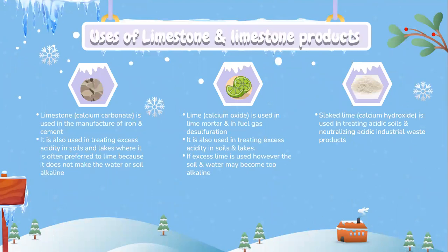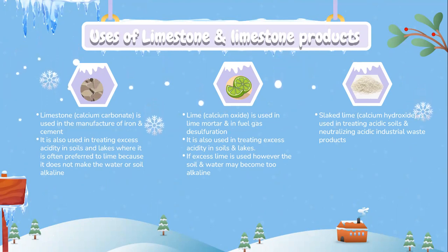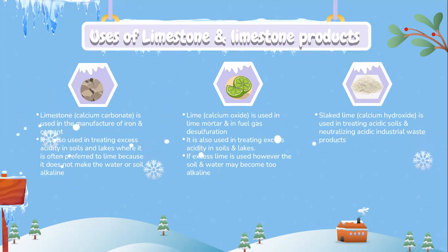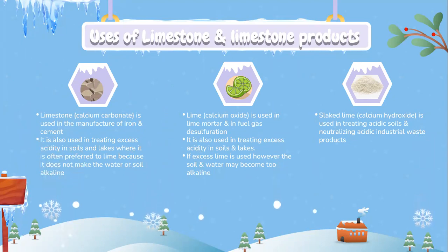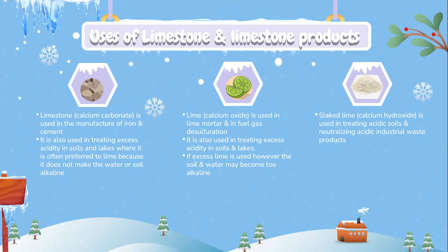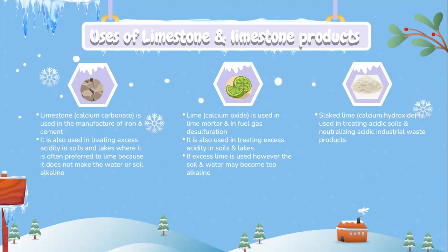Uses of limestone and limestone products: Limestone, or calcium carbonate, is used in the manufacture of iron and cement. It is also used in treating acidity in soil and lakes, where it is often preferred to lime because it does not make the water or soil too alkaline. Lime, or calcium oxide, is used in lime water and in flue gas desulfurization.